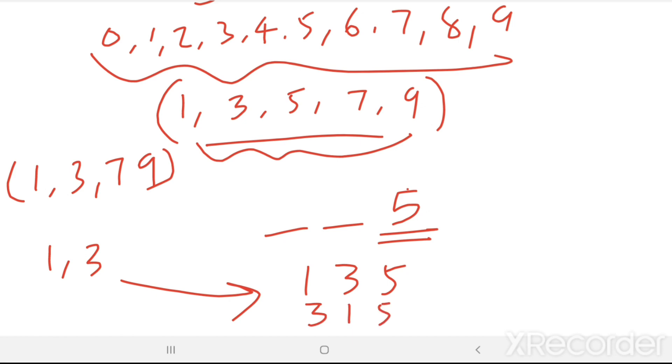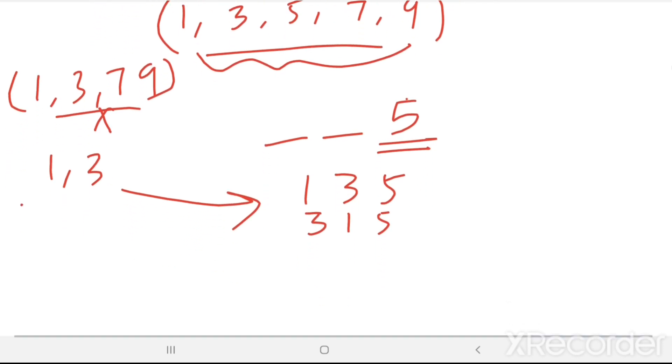So in this way we can take two digits out of these four digits and we can arrange them. So we get total number of numbers by taking two digits out of four digits and arranging those two digits in 4P2 ways.